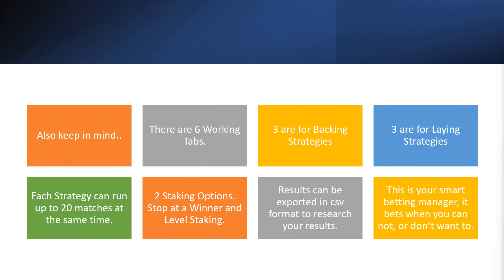Keep in mind that there are 6 working tabs — 3 are backing strategies and 3 are laying strategies. Each strategy can run up to 20 matches at one time, though you can nominate to only have 2 or 3 tabs activated. Bear in mind that if you're betting 10 minutes before a match and the match runs around 120 minutes, one tab will be consumed for about 2 hours and 20 minutes before it is freed up to accept another bet. It has 2 staking options — Stop at a Winner and Level Staking — and results can be exported in CSV format, which is great for researching and improving your strategies.